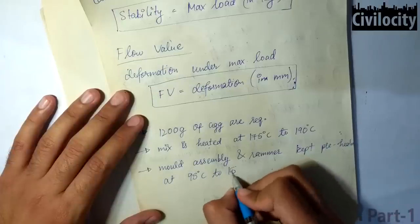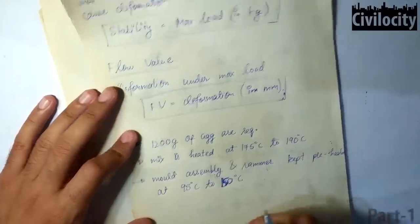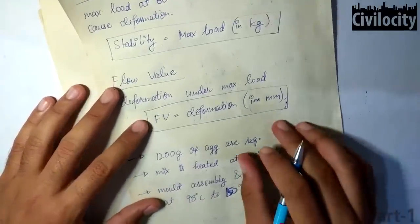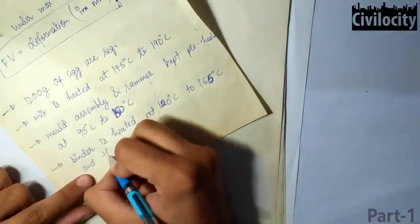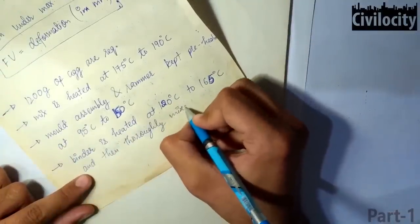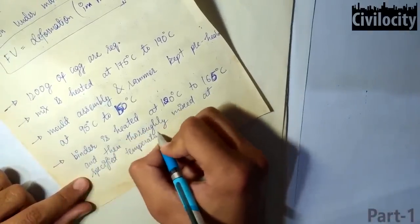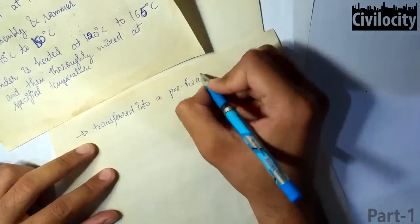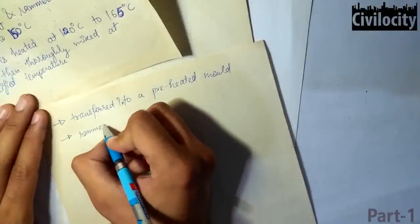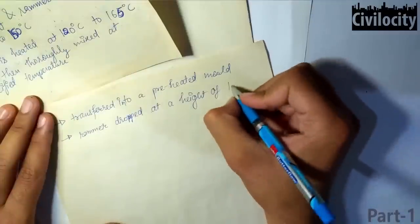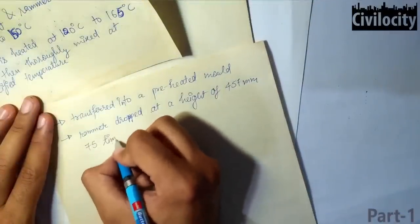When this mix is compacted, the mold assembly and the rammer are also kept preheated at a temperature of 95 degree Celsius to 150 degree Celsius. The required quantity of bituminous binder is heated to a temperature of 120 degree Celsius to 165 degree Celsius and then mixed with these aggregates and filler material. After thoroughly mixing at a specified temperature, this mix is placed in a preheated mold assembly. After this bitumen is transferred into a preheated mold, this bitumen is compacted by a rammer which is kept at a height of 457 millimeters and then dropped 75 times on either side of this mold.